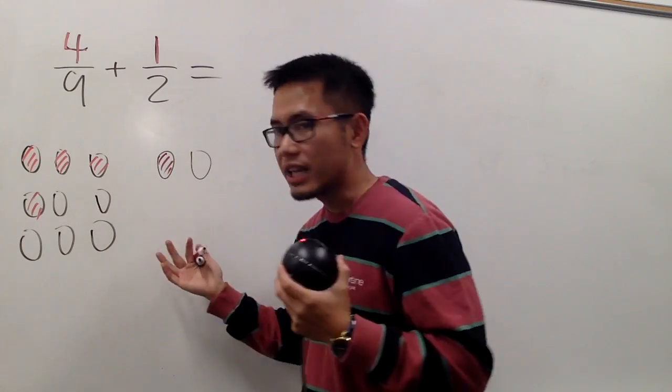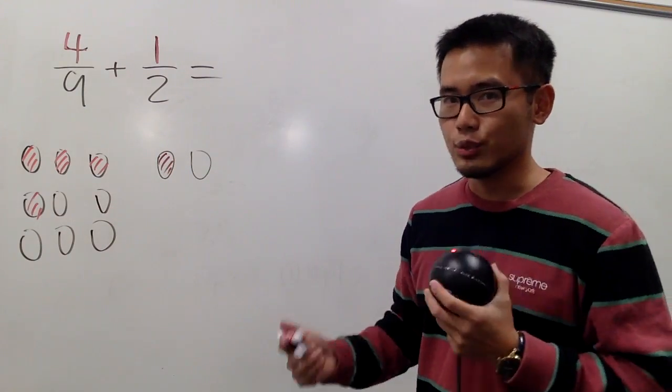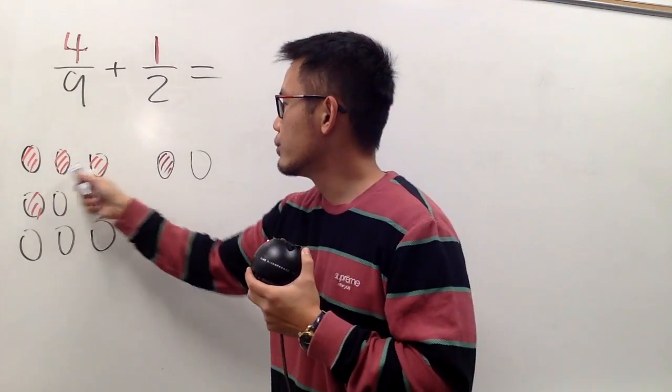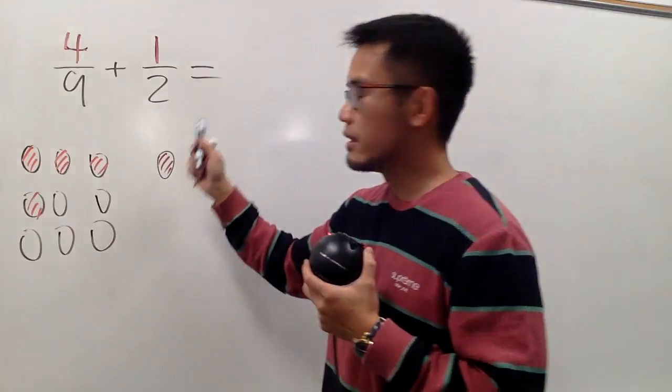And now, we're just putting them together. How many Oreo cookies do we have? Like, in black, let's see. 1, 2, 3, 4, 5, 6, 7, 8, 9, 10, 11.